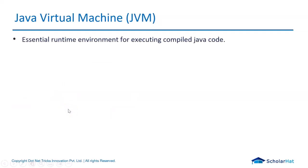Java Virtual Machine, or JVM, is an essential runtime environment for executing compiled Java code. We have different JVMs for different operating systems like Windows, Linux, or Solaris, but all JVMs understand the bytecode given to them, no matter which machine the bytecode was generated from. This makes Java platform independent, so the bytecode can be executed on any machine.